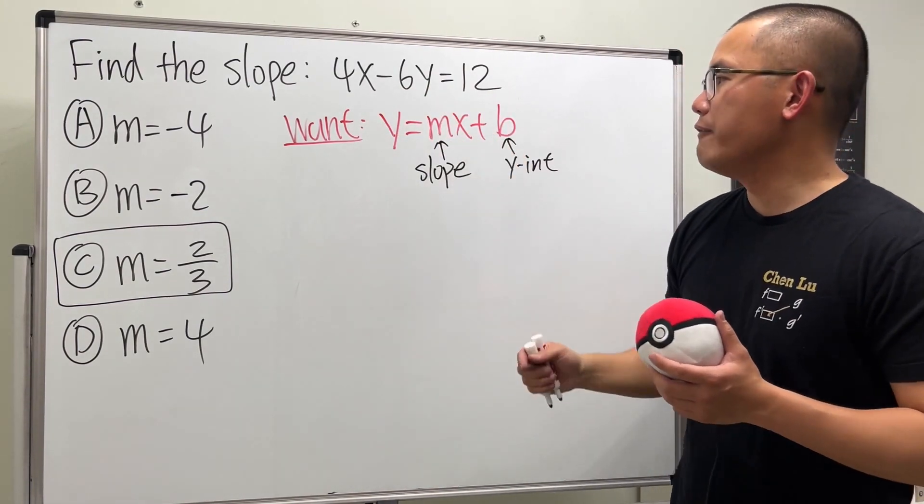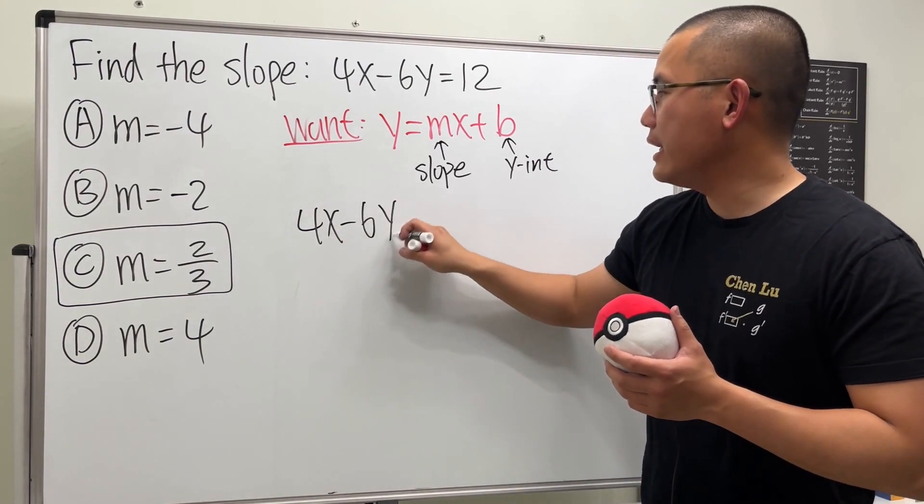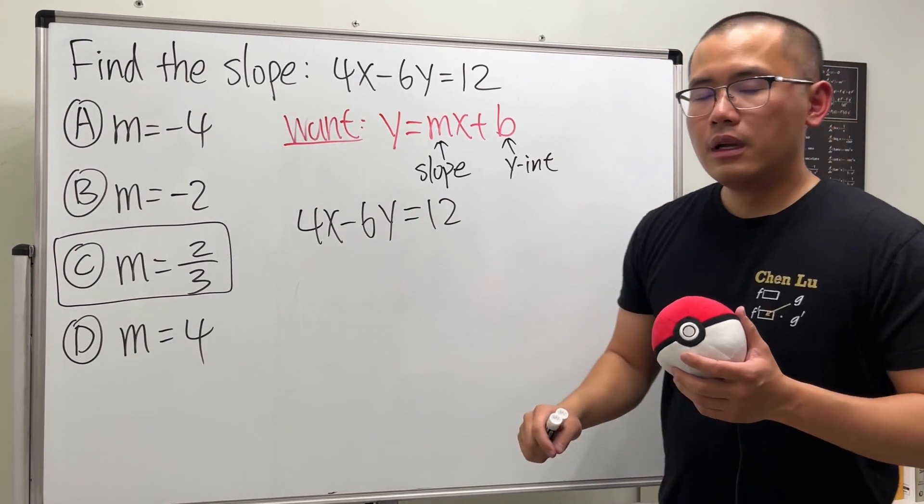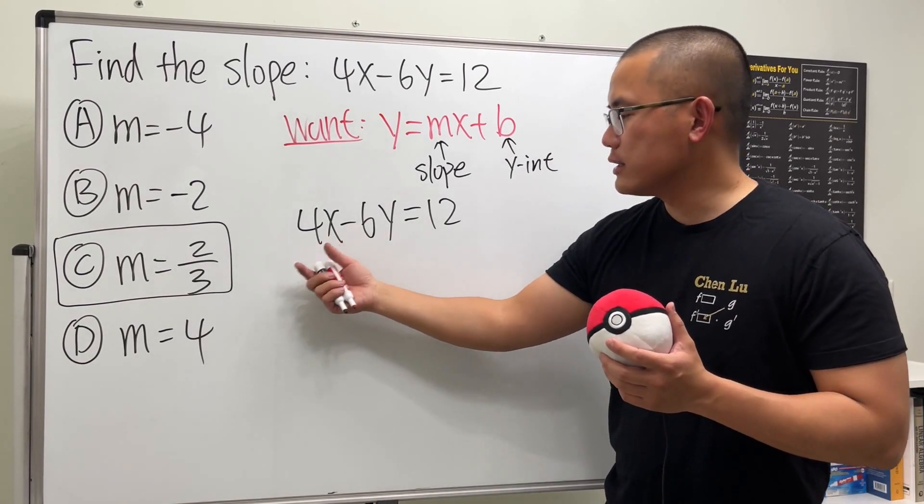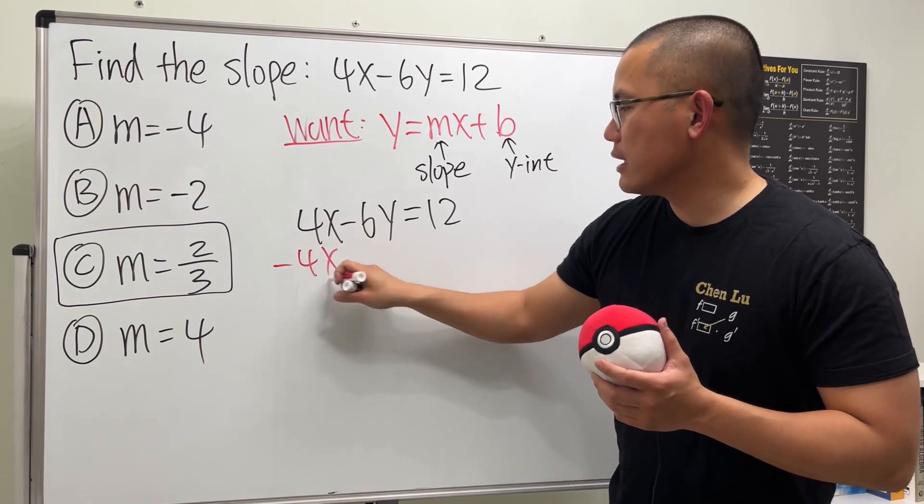So let's go ahead and just put this equation into this form and then we can look for the m value. Let's write that down: 4x minus 6y is equal to 12. The first thing that we have to do is to put the 4x to the other side, and we can do that by subtracting 4x on both sides.